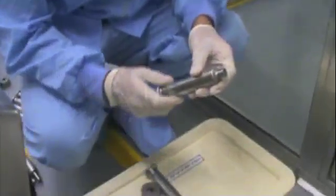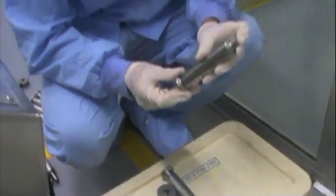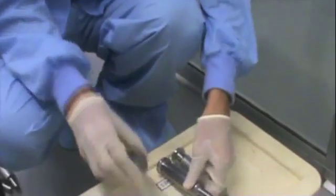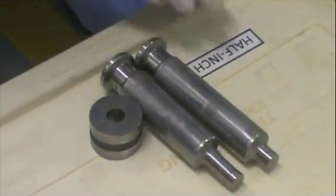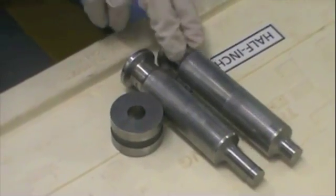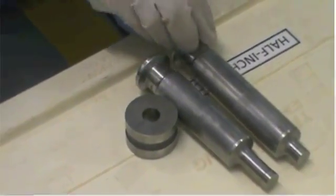These are the parts that we're going to put in the machine. This is the upper punch, this is the lower punch, and this is the die. First we're going to start with the lower punch, then the die, and finally we put in the upper punch.